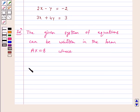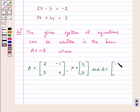A is equal to 2 minus 1, 3, 4. x is equal to x, y and B is equal to minus 2 and 3.